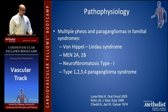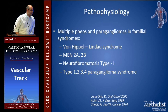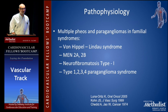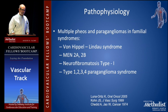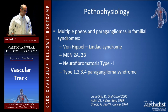Multiple pheochromocytomas and paragangliomas are also seen in familial tumor syndromes like Von Hippel-Lindau syndrome, MEN2A and 2B, and neurofibromatosis type 1. This is all important for the written boards — there will likely be a question on this somewhere, though perhaps not specifically on the vascular boards.